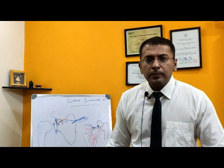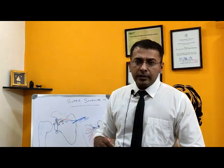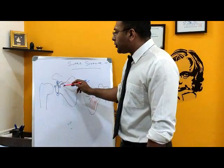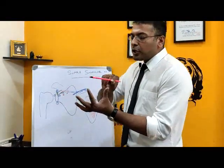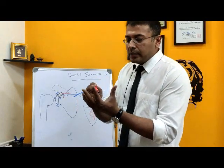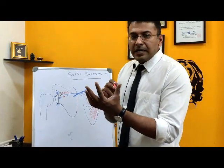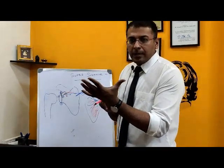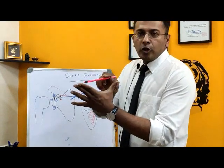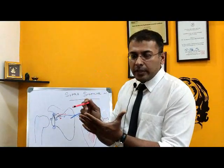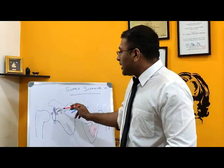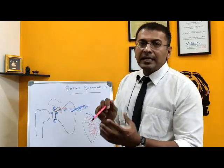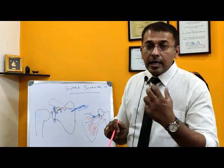What are the possible causes of this entrapment or neuropathy? When the nerve enters the notch, normally the notch is U-shaped — quite accommodative with good volume. But in some patients, instead of a U-shape, it could be V-shaped or a very shallow notch. That is one possibility. Second, the transverse suprascapular ligament could be calcified and thickened, causing direct compression of the nerve.